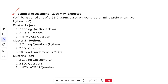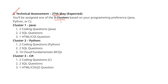The third assessment is the technical assessment, happening on 27th May. You will be assigned one of three clusters. An important clarification: even if you selected a cluster during registration, the final cluster allotment is in Cognizant's hands. You may be assigned a different cluster than what you chose. To find out which cluster you received, click the assessment link — the first screen will show CL1, CL2, or CL3. Clicking the link does not start the assessment.